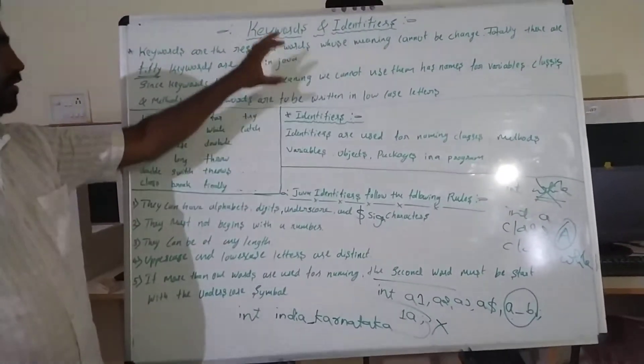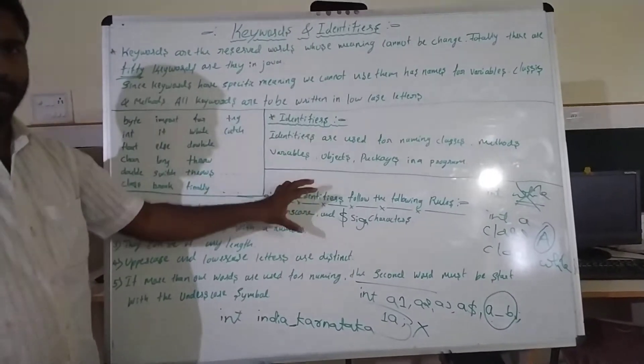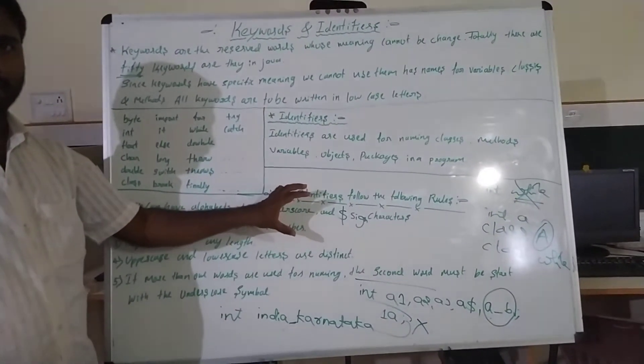These are the rules for declaring identifiers and the keywords for identifying identifiers. Thank you.